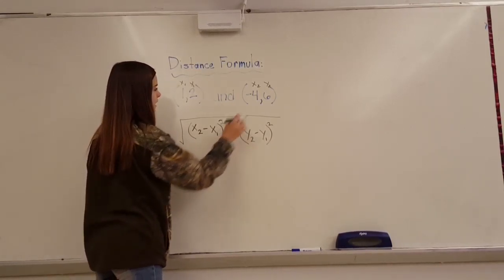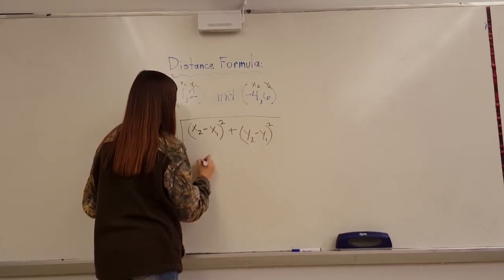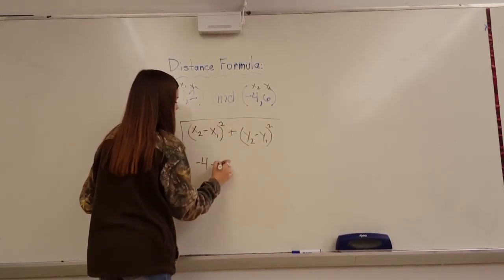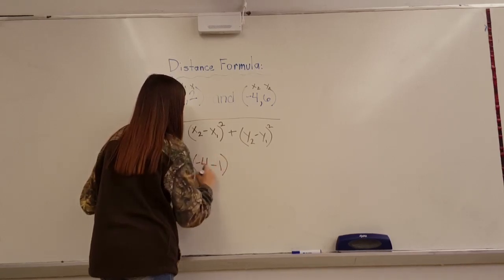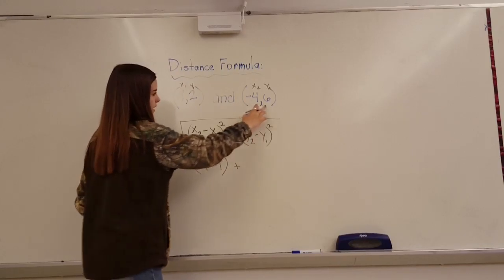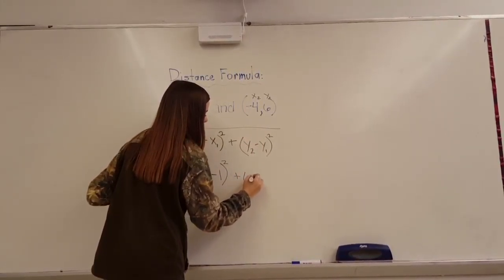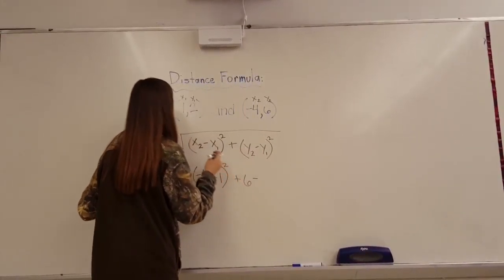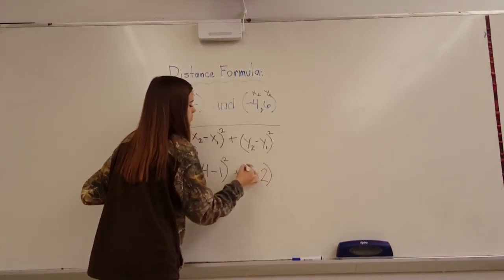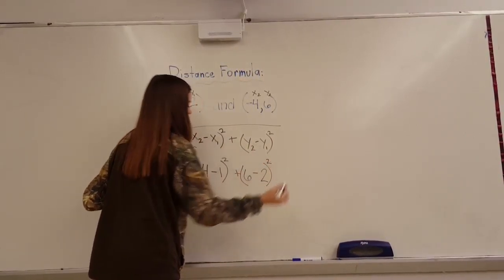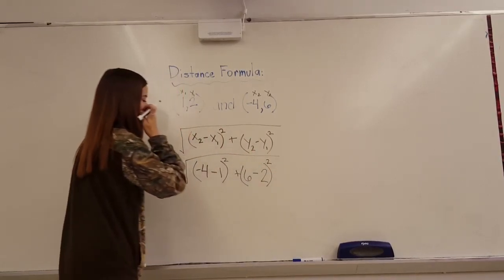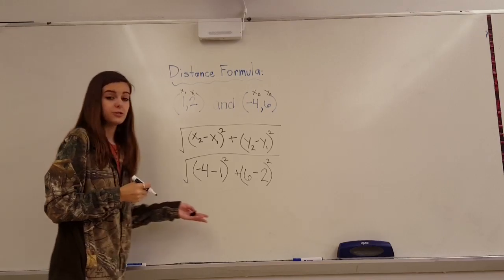So we have x2, which is negative 4, minus x1, which is 1 in parentheses with our square root symbol, plus y2, which is 6, minus y1, which is 2. And then those also in parentheses with the square root. And we add our square root symbol. And now we just do math.